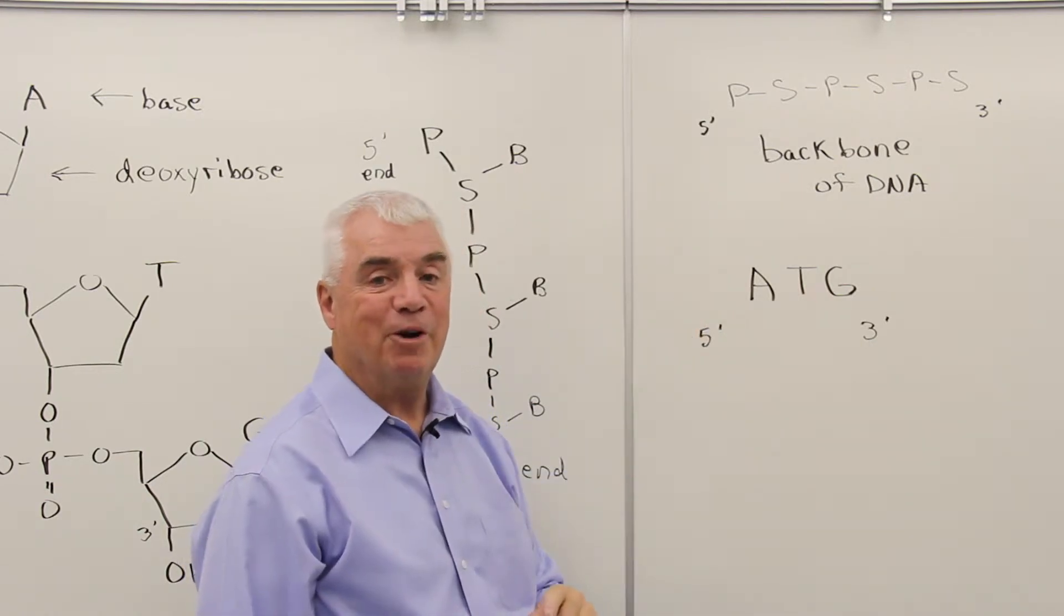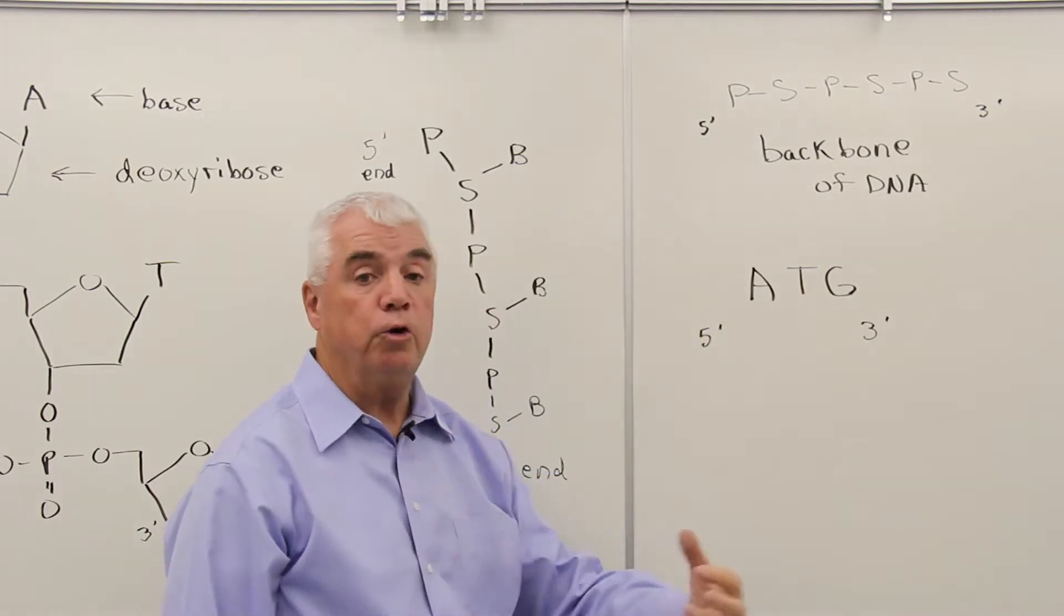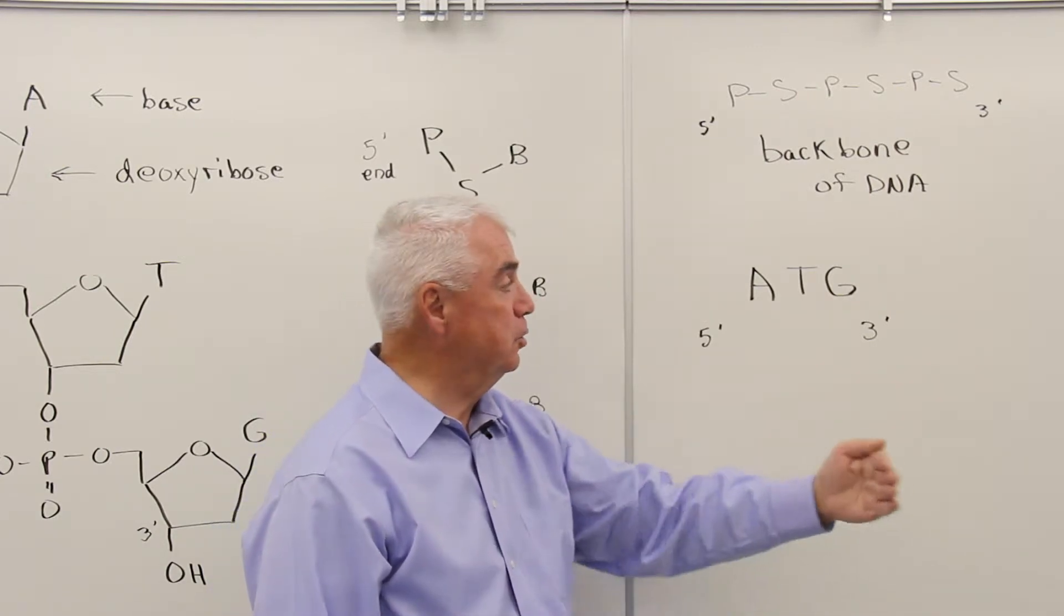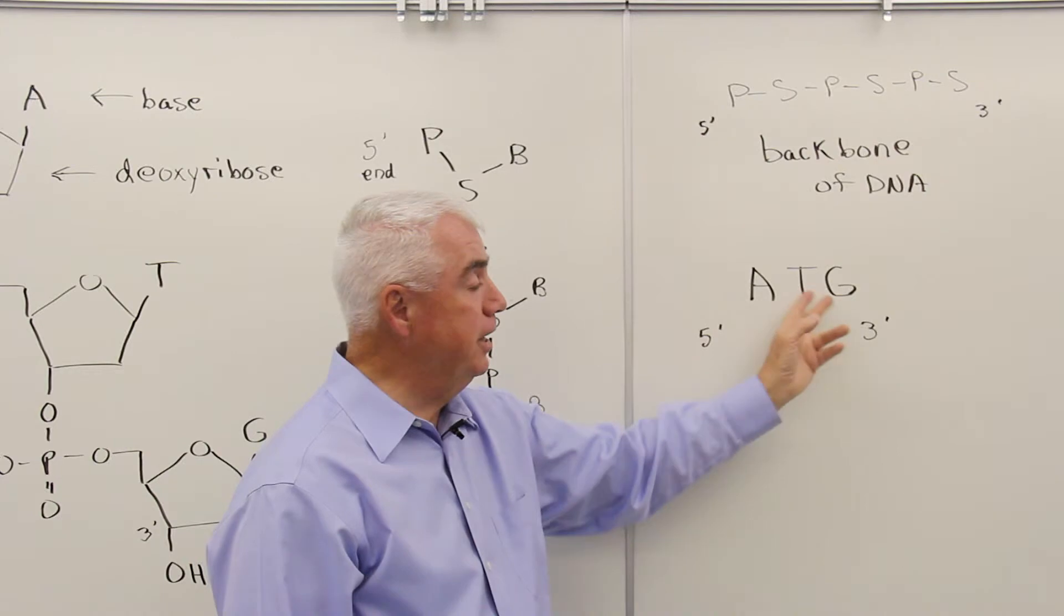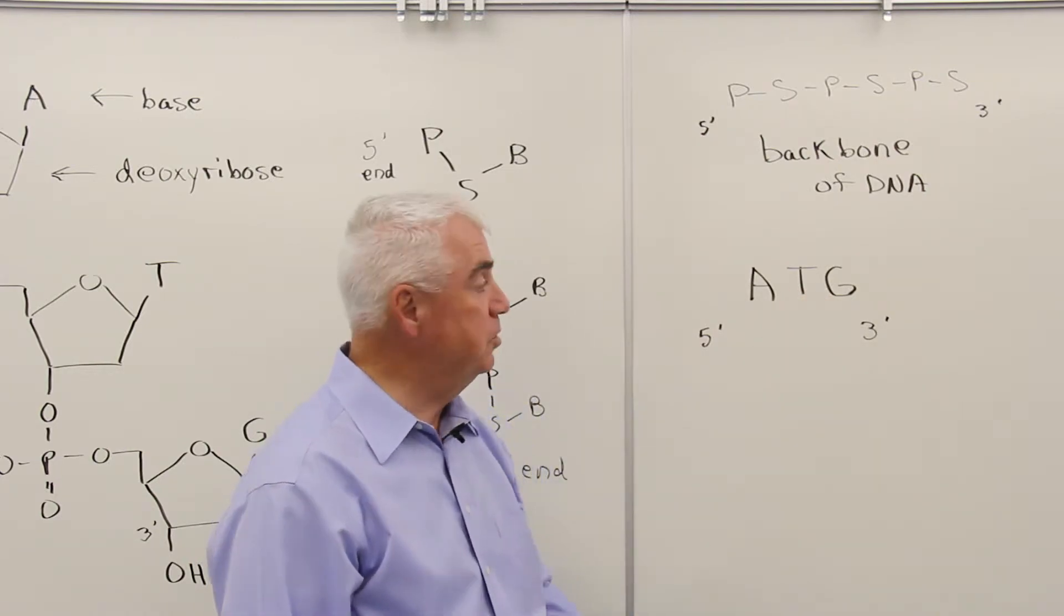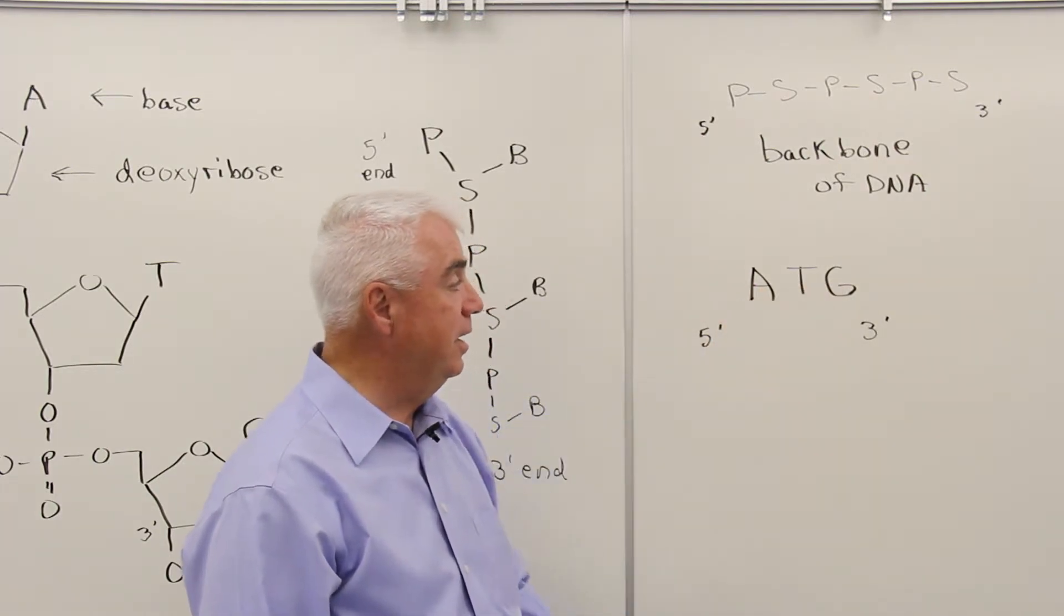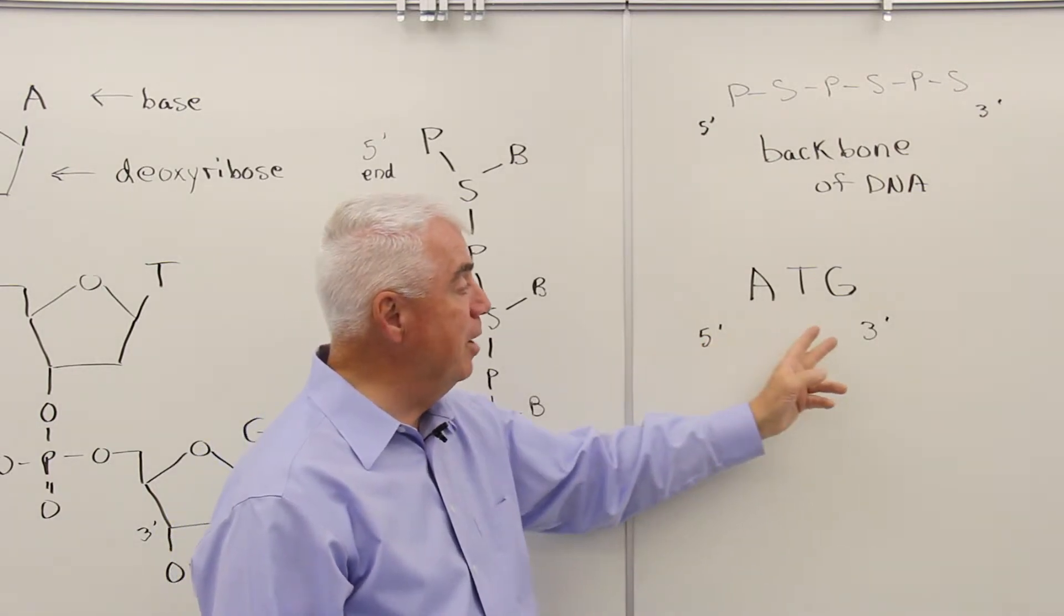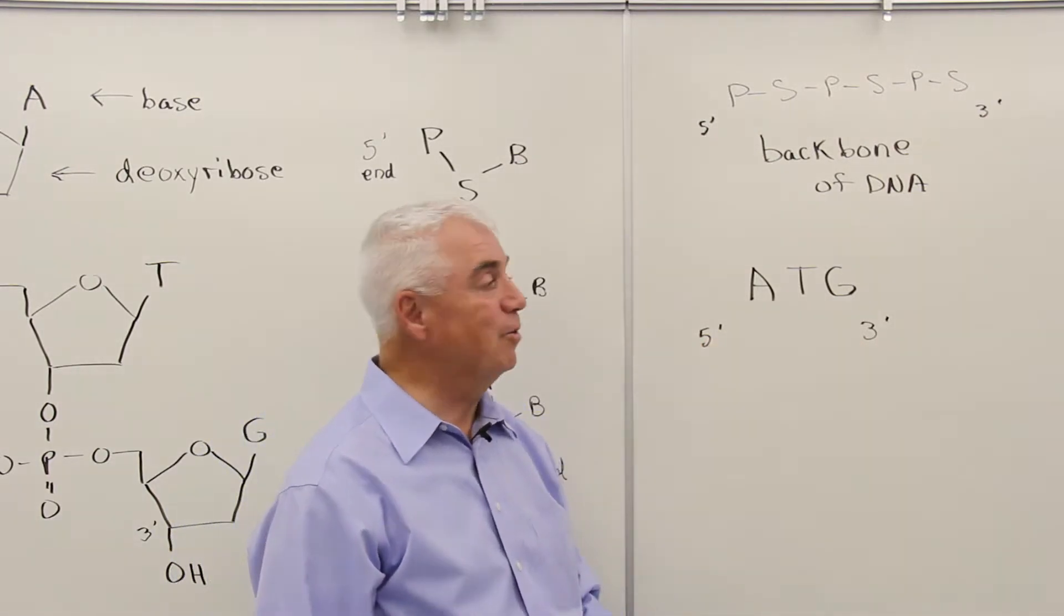The nucleotide structure that we drew just a few moments ago that contained three nucleotides, we could really abbreviate the structure since all nucleic acids are alike in the phosphorus, sugar, phosphorus, sugar, just to indicate the three bases, the sequence A, T, and G. And again, by convention, this is the five prime end of the molecule. This is the three prime.